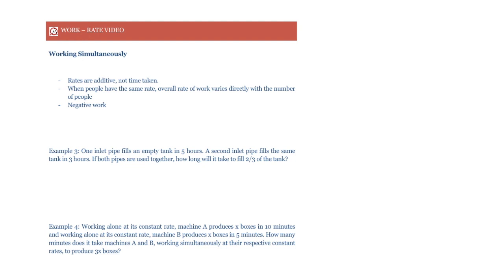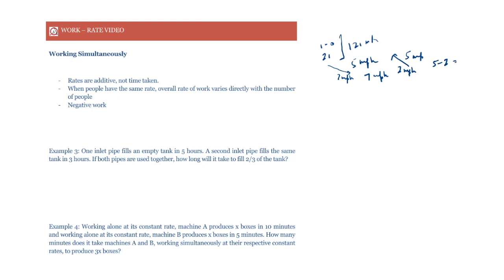Recall the concept of effective speed from the TSD module. An airplane moving at 100 mph with a tailwind of 20 mph has an effective speed of 120 mph. A boat going downstream at 5 mph with a stream speed of 2 mph has an effective speed of 7 mph. Going upstream, the speeds are subtracted: 5 minus 2 equals 3 mph. This concept of effective speed has a direct parallel in work rate.